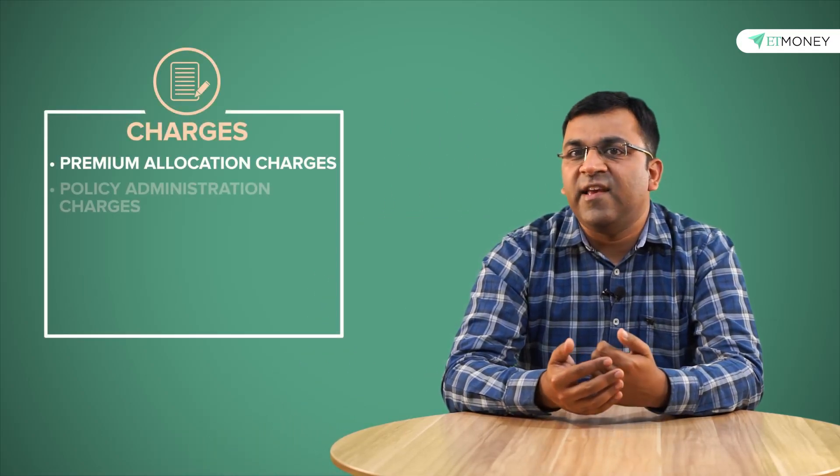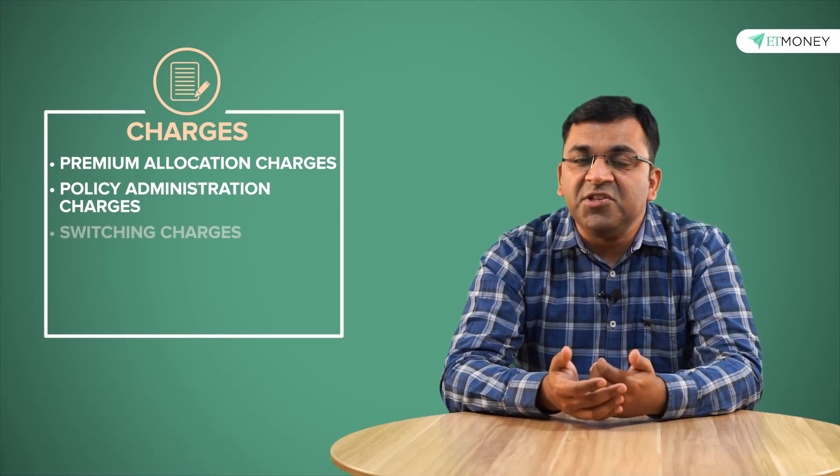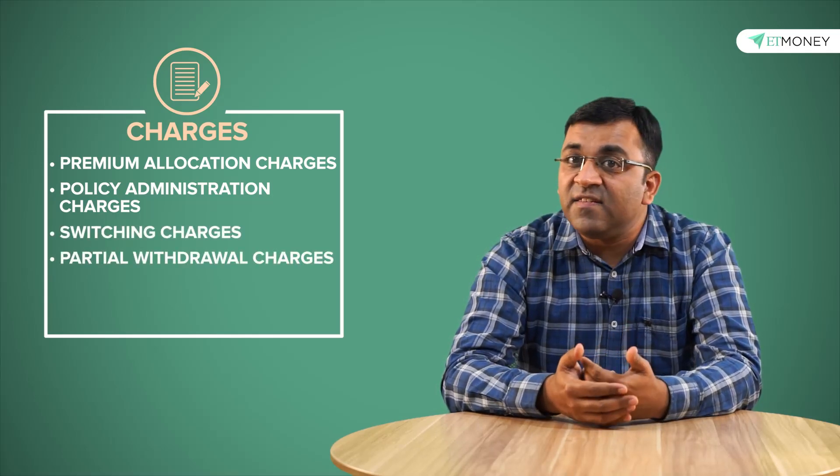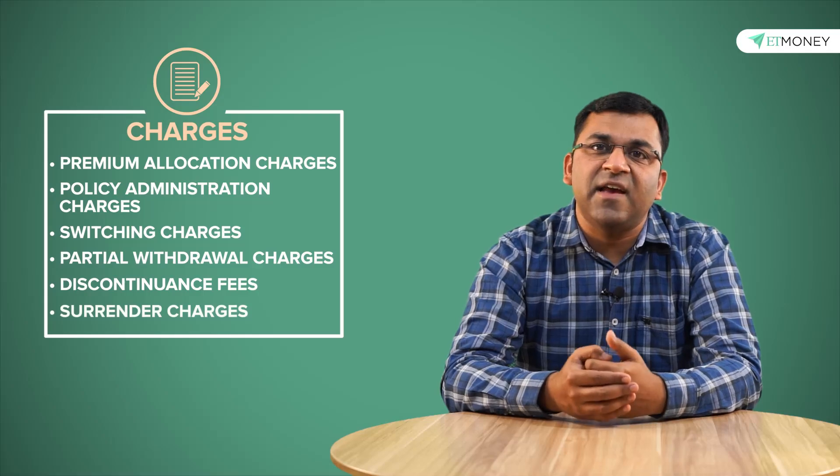In the early years, that is the period between 2004 and 2010, ULIPs were notorious for charging policyholders obscene expenses. These charges came in many different forms and included premium allocation charges, policy administration charges, switching charges, partial withdrawal charges, discontinuance fees, surrender charges and a few more.